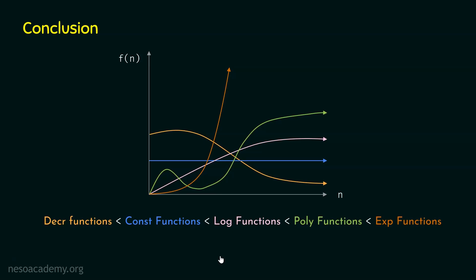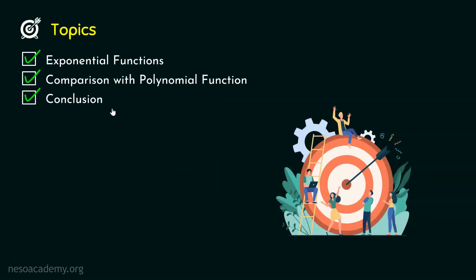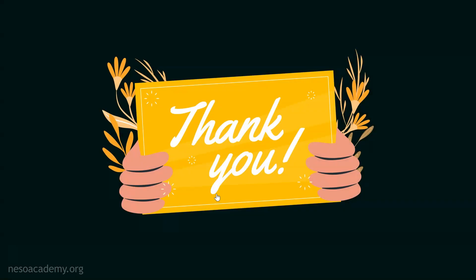So, one thing is clear: exponential functions are asymptotically bigger than polynomial functions, polynomial functions are asymptotically bigger than logarithmic functions, logarithmic functions are asymptotically bigger than constant functions, and constant functions are asymptotically bigger than decrement functions. This is the final conclusion of the different types of functions in asymptotic notations. With this, we are done with this lecture. Thank you for watching this presentation. I will see you in the next one.